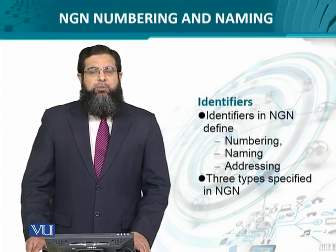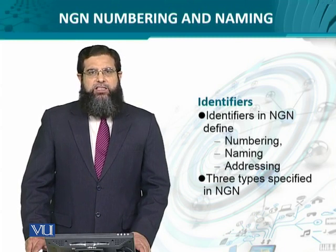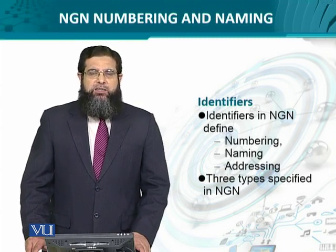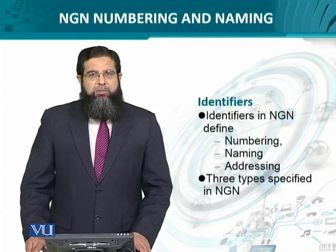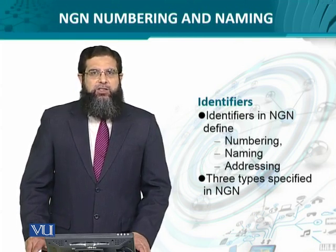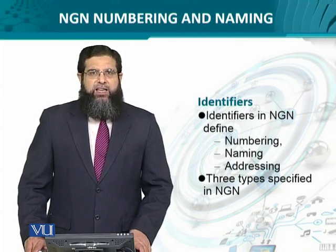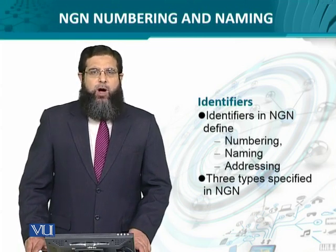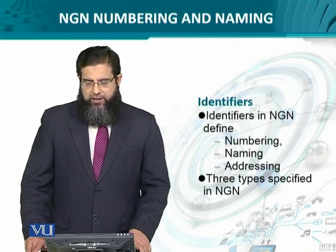The numbering system is defined to determine how many devices are there in the network. It is similar to the IP addressing. The naming, you can consider it something similar to the DNS. And addressing is again similar to IP address, on the basis of which the packets are delivered.